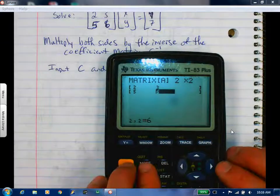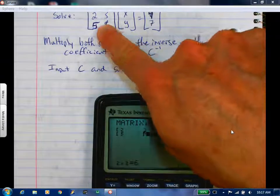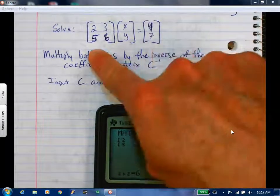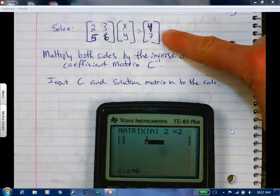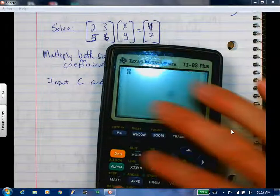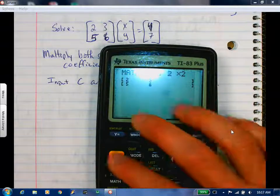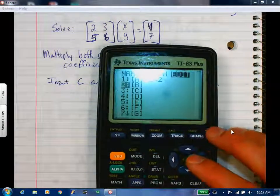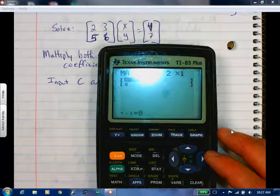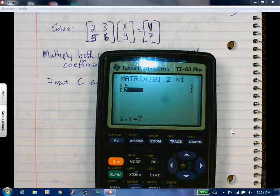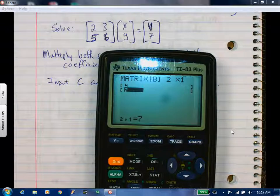Not X and Y. We don't put those in. We're just going to put the coefficient matrix and the solution matrix. So that's going to be, edit matrix B. It needs to be a 2 by 1. 4 and 7. Do we all have those in?